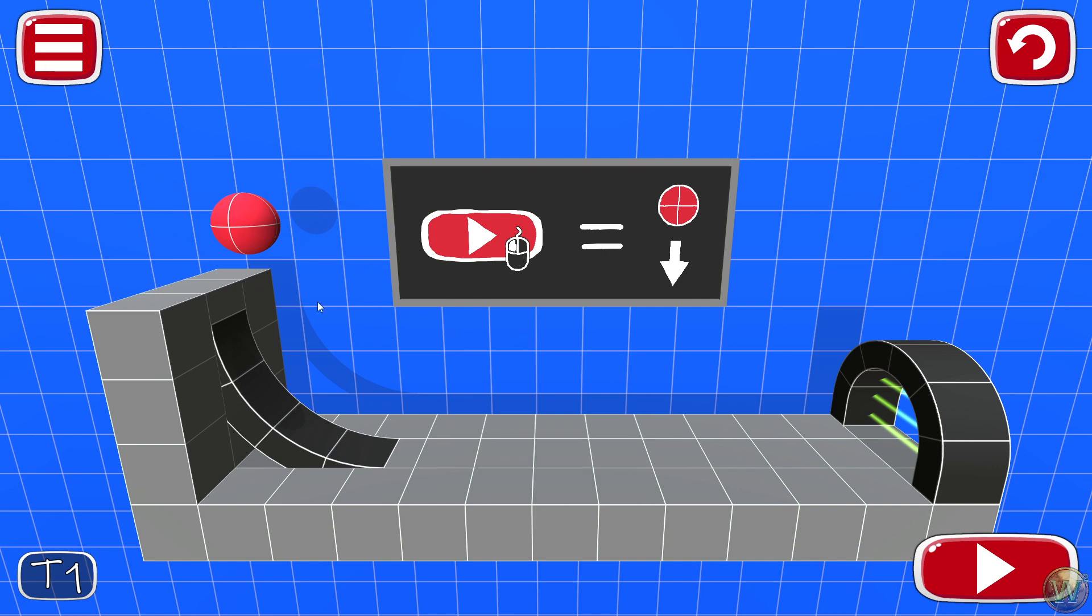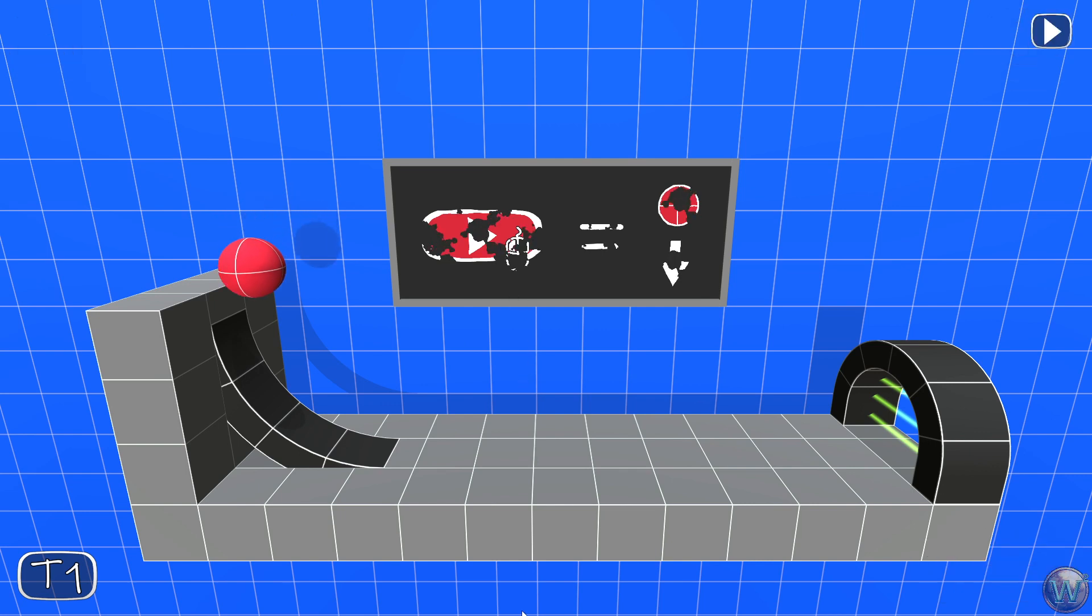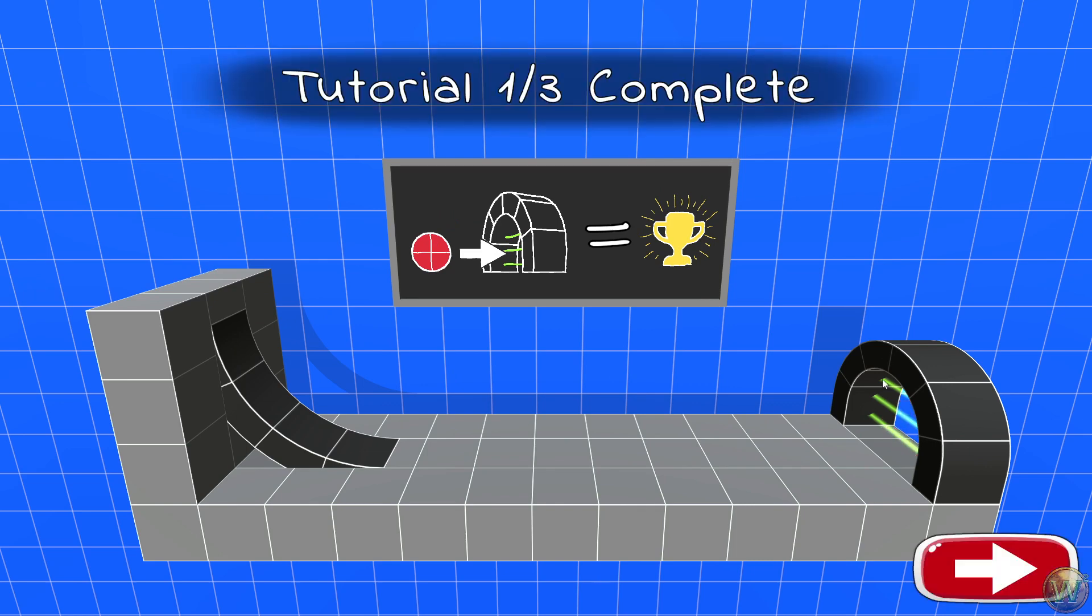The ball is here floating freely. When we're ready to engage gravity we simply click the play button and the ball will hopefully proceed to the exit.